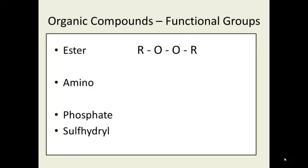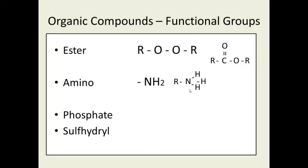The amino group is a nitrogen with two hydrogens — nitrogen forms three bonds. This nitrogen has a tendency to pick up hydrogen ions from solution, giving it one extra proton in association with it, which gives it a positive charge. This is our basic functional group. If you're looking at a molecule and trying to decide whether it's an acid or a base, if you see a positive charge on it, you know it's a base. In biology, it's generally going to be the amino group.